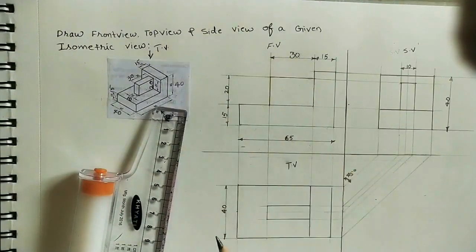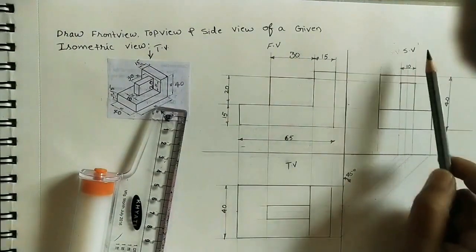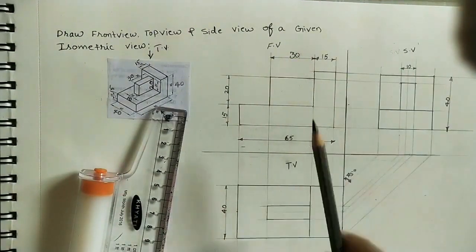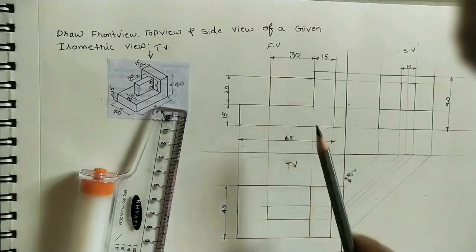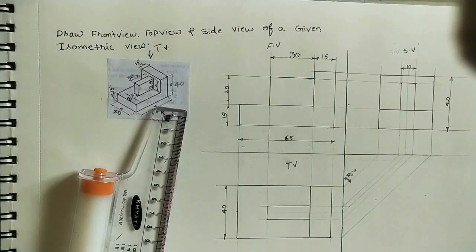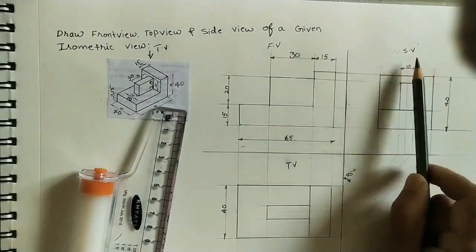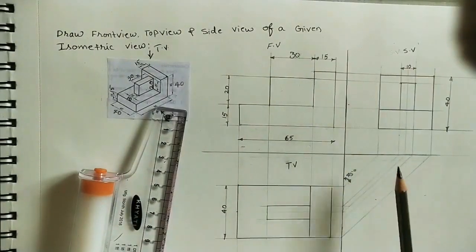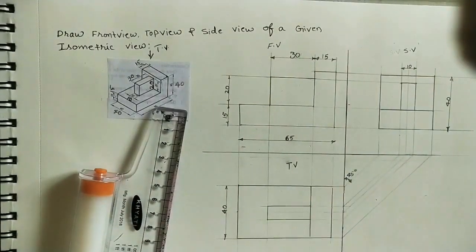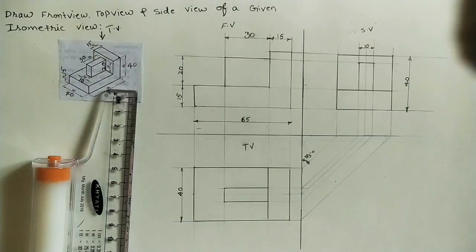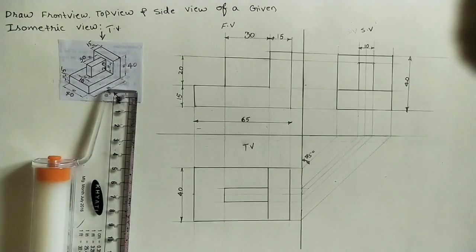These are the front view, top view, and side view of the given diagram. In some cases they will ask only two views and won't ask for the side view — at that time you have to do only the front view and top view. If they are asking for the side view, only then do the side view. If you like this lecture, please press the like button, subscribe to my channel, and share with your friends. Thank you.